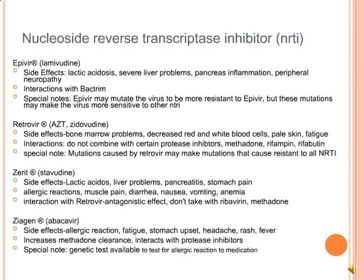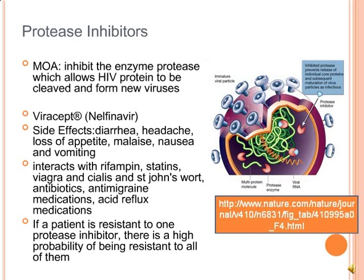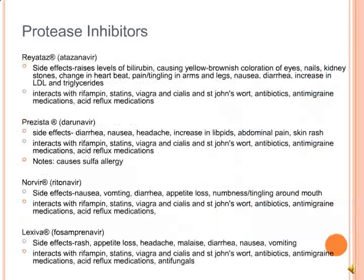Protease inhibitors inhibit the enzyme protease, which allows HIV proteins to be cleaved and form new viruses. An example includes Viracept. Side effects include diarrhea, headache, loss of appetite, malaise, nausea, and vomiting. It can interact with rifampin, statins, Viagra, Cialis, St. John's wort, antibiotics, anti-migraine medications, and acid reflux medications. If a person has resistance to one protease inhibitor, there is a high probability of being resistant to all of them.